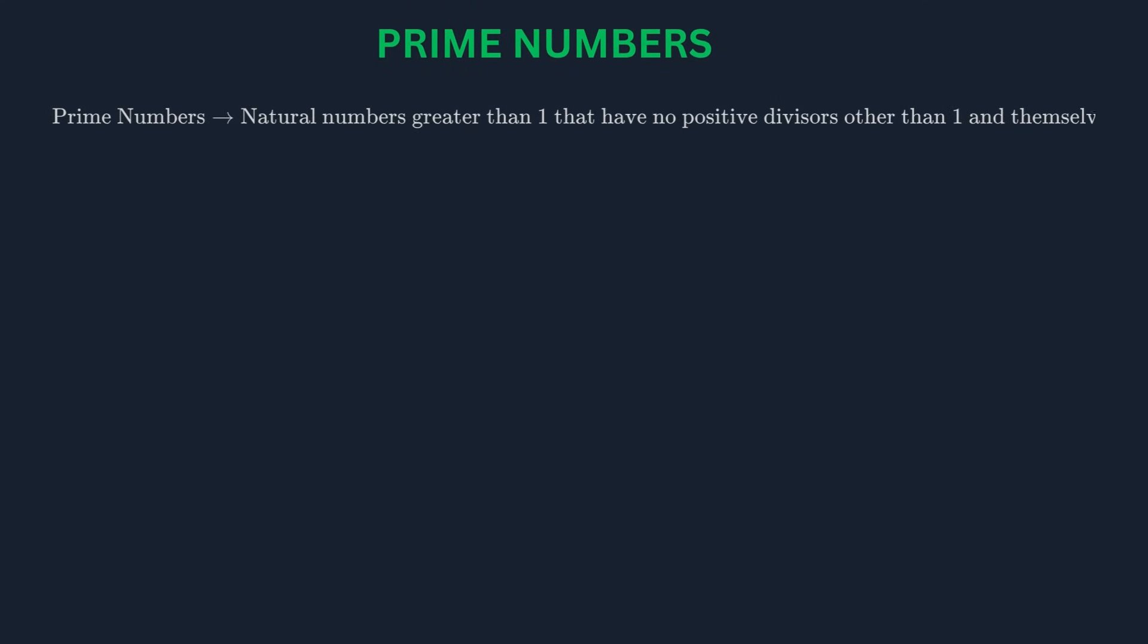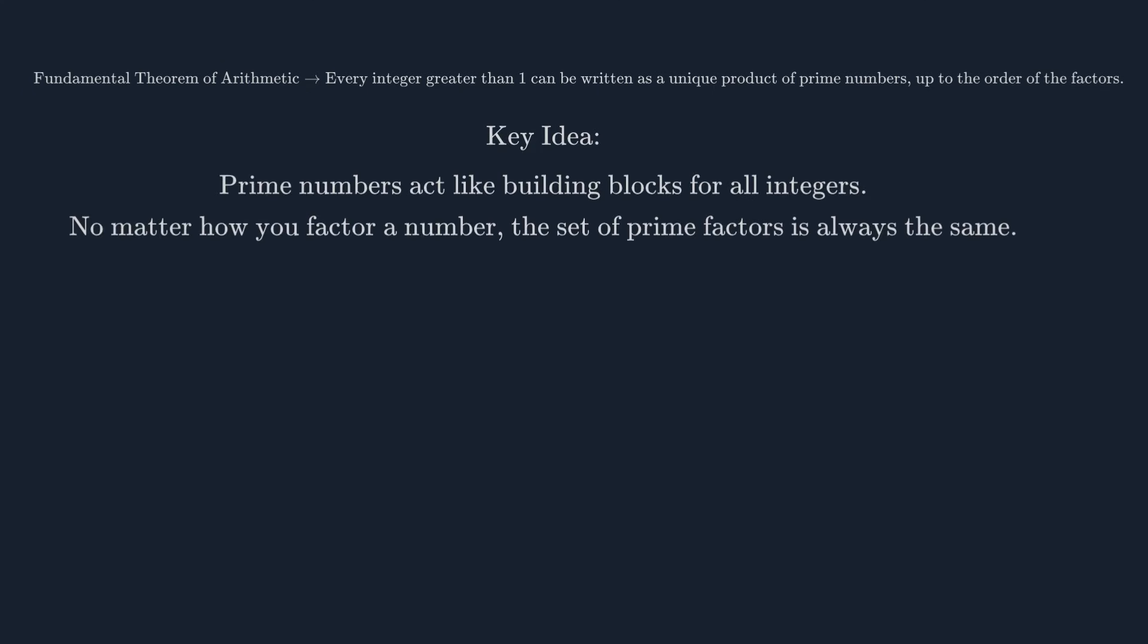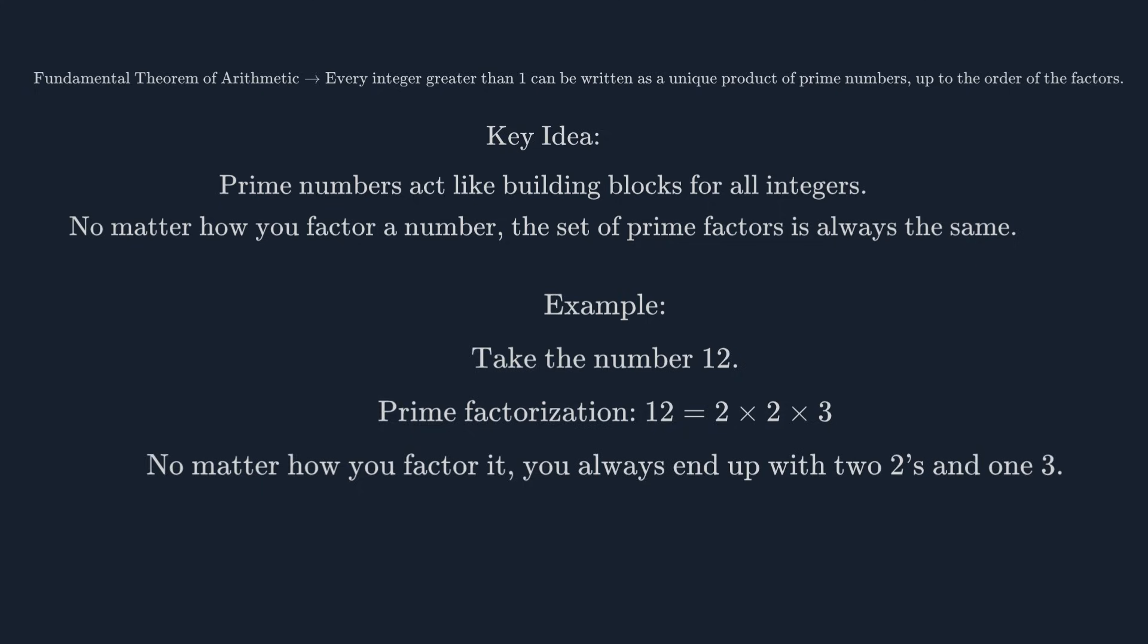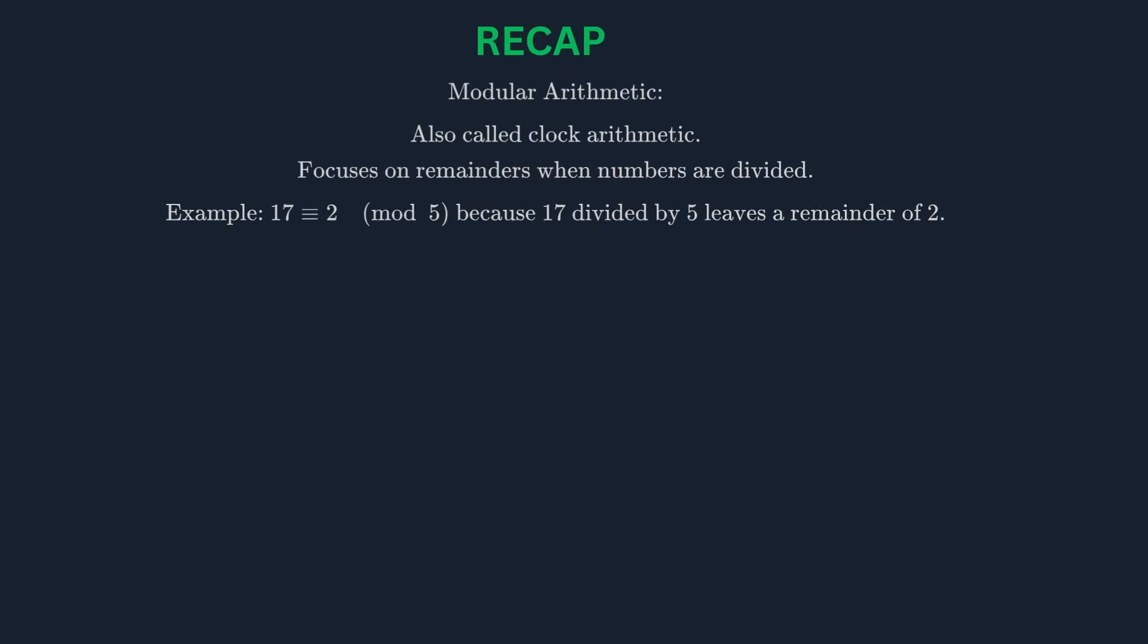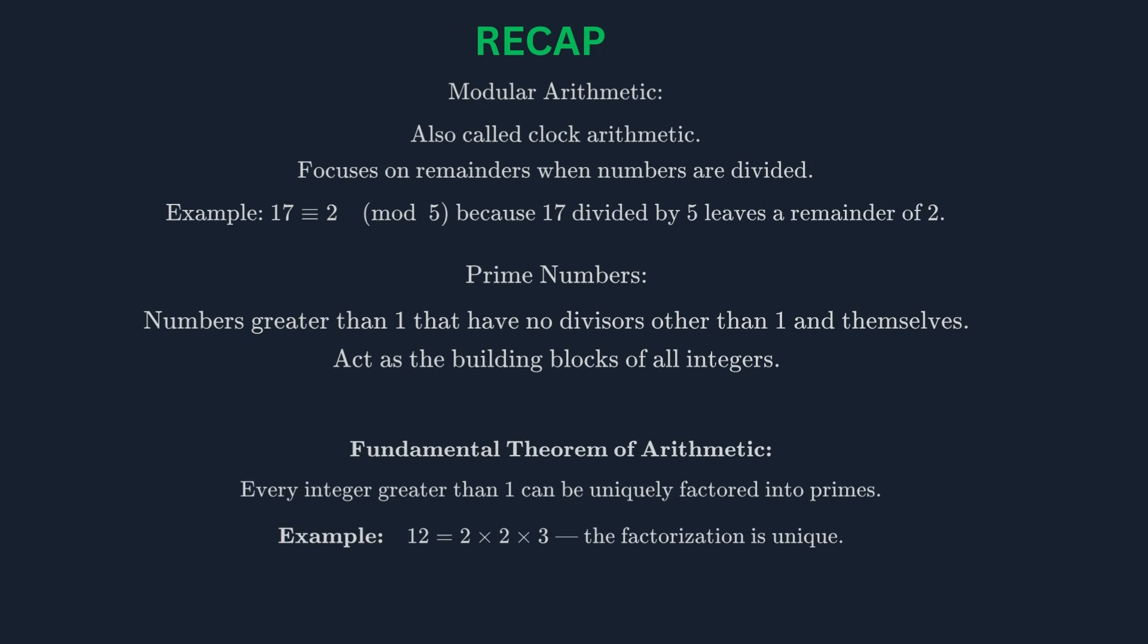Another key area of number theory is the study of prime numbers. A prime number is a natural number greater than 1 that has no positive divisors other than 1 and itself. Examples include 2, 3, 5, 7, and so on. The Fundamental Theorem of Arithmetic states that every integer greater than 1 can be written as a unique product of prime numbers. This is like the building blocks of numbers. For example, the number 12 can be factored as 2 × 2 × 3. No matter how you factor it, you'll always end up with two 2s and one 3. This unique prime factorization is the basis for many number theory concepts. To recap: number theory is the study of integers. We've seen modular arithmetic, which is like clock arithmetic, and the importance of prime numbers as the building blocks of all integers. These concepts are not just abstract—they are the foundation of our digital world.